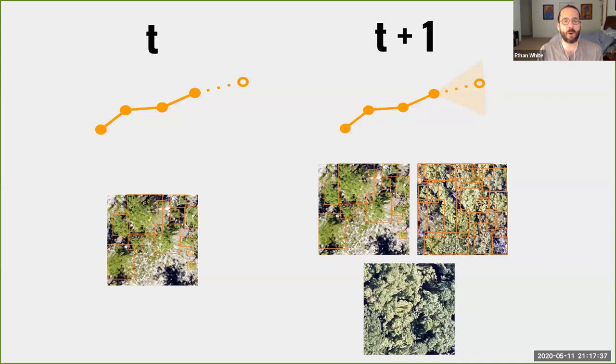In the first round of our remote sensing competition, we focused on only making predictions at a single site. Now in the current round, we're focusing on transferability by pushing participants to develop methods that work across different forest types and can make predictions in a forest that they have no training data for.